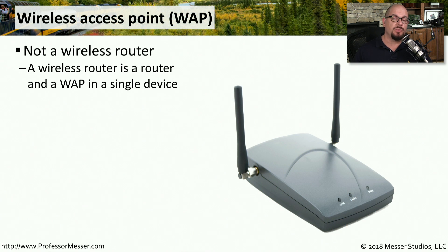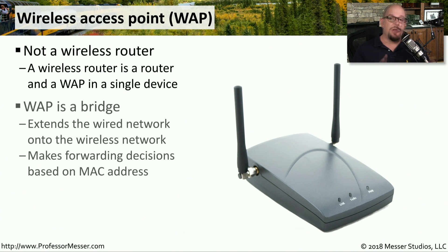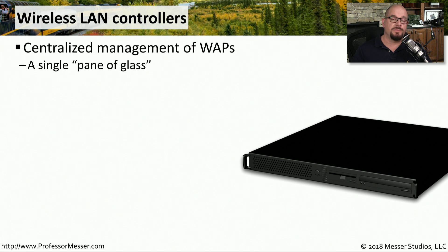Many organizations provide access to wireless networks using a wireless access point, or WAP. Although these look similar to the wireless router you might use at home, their operation is quite different. A home wireless router is also a router, switch, and has other functionality. In comparison, a wireless access point simply extends a wired network onto a wireless network, bridging those two topologies. A wireless access point makes its decision based on the destination MAC address, so it's acting as a bridge.